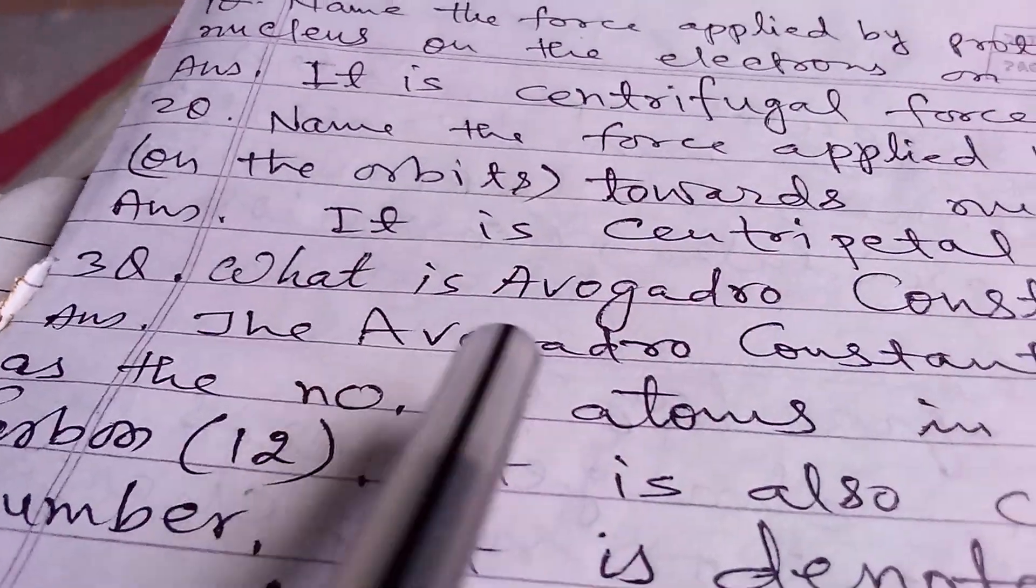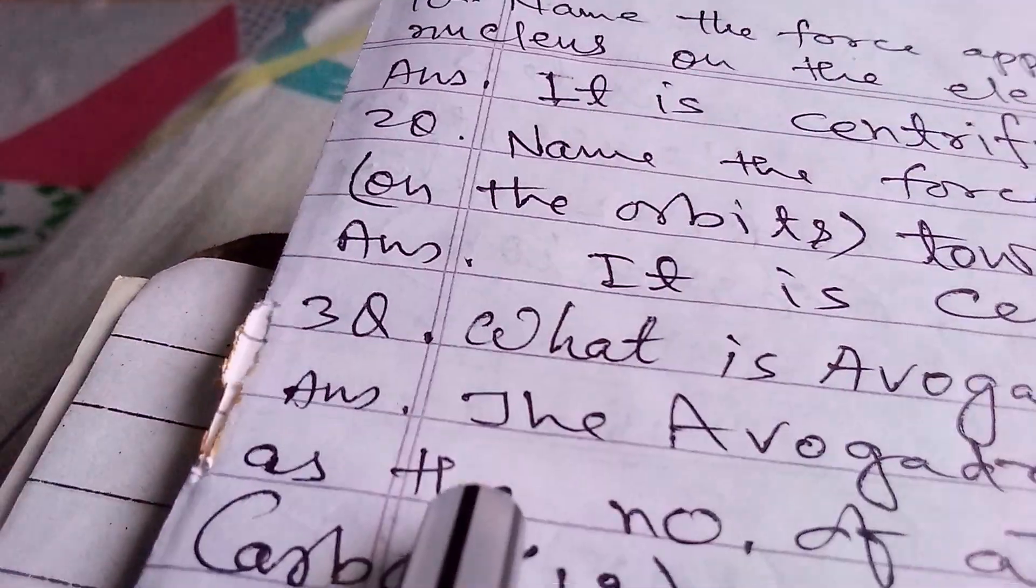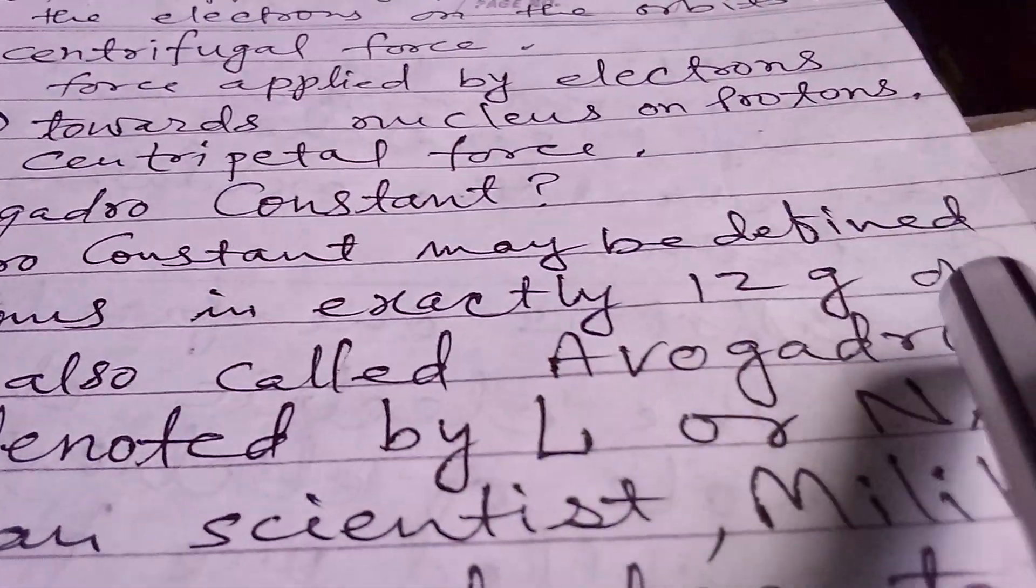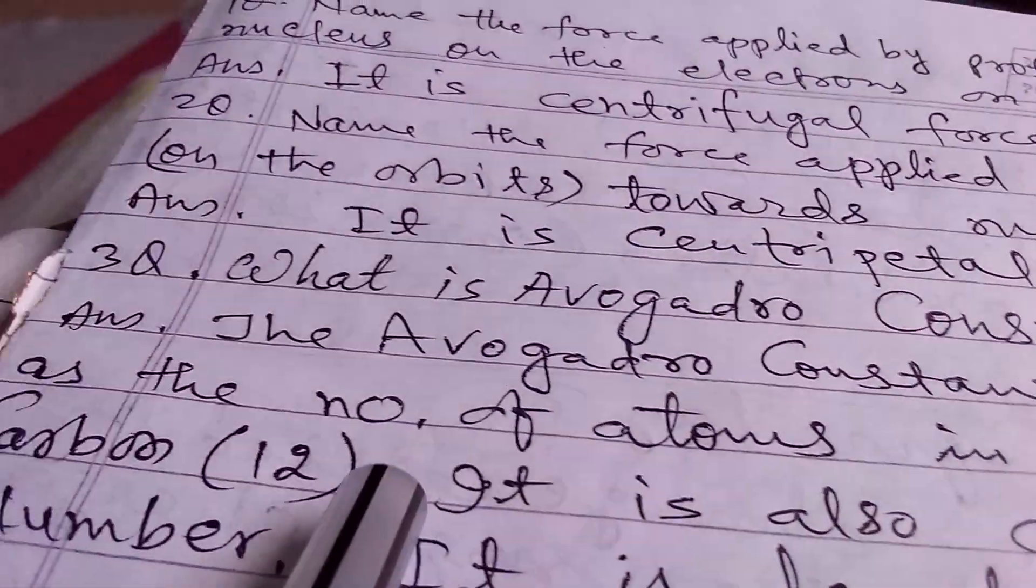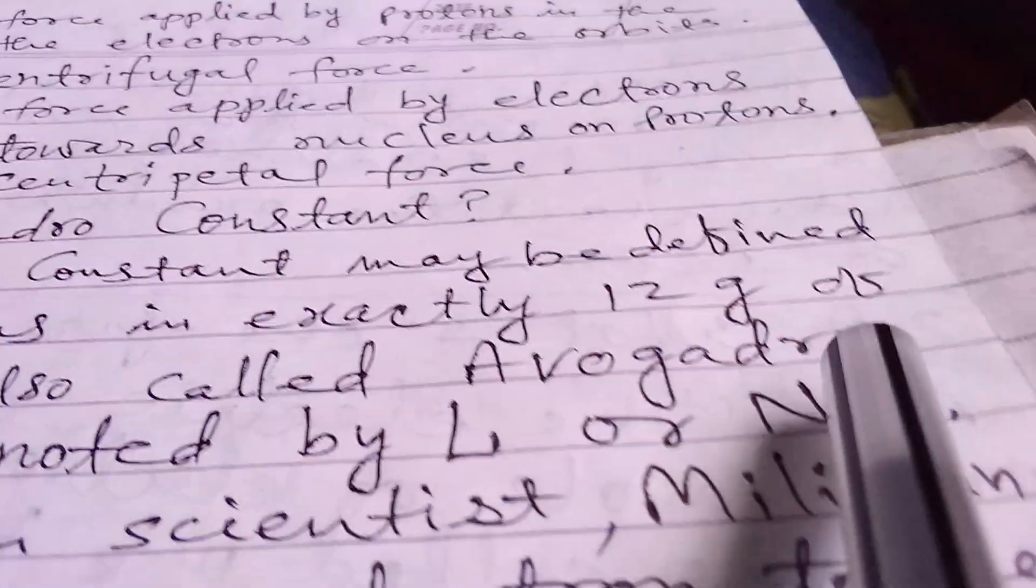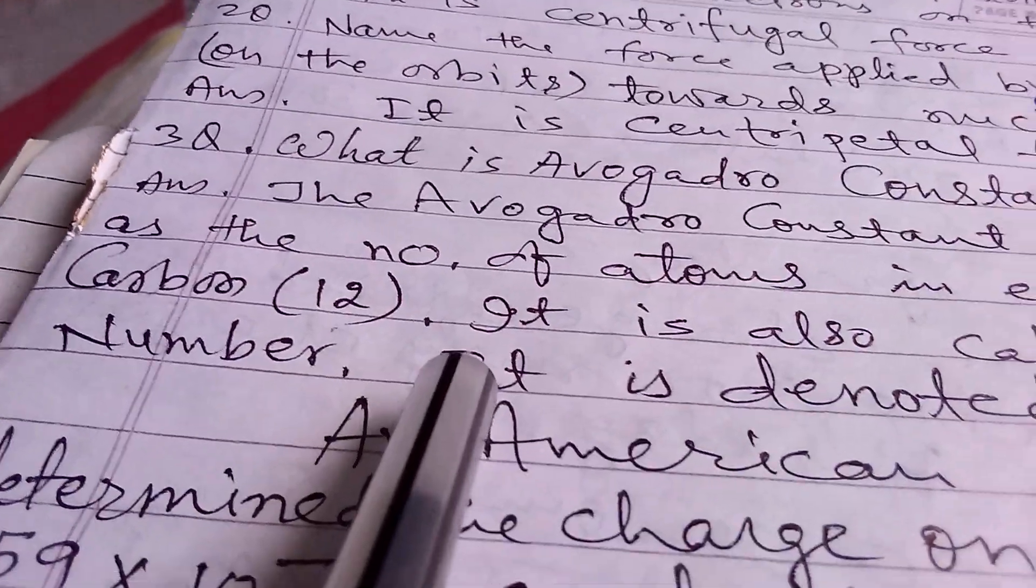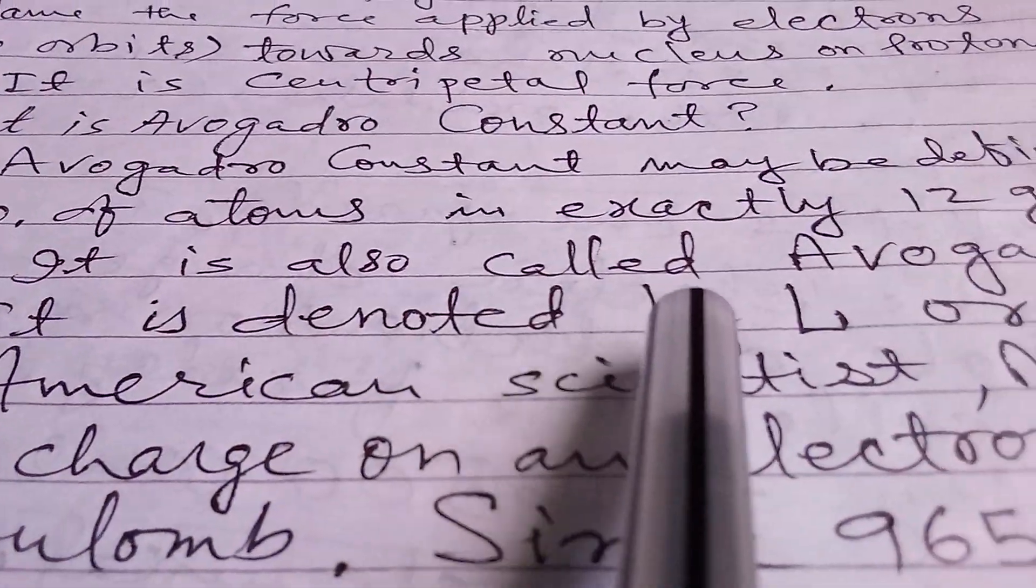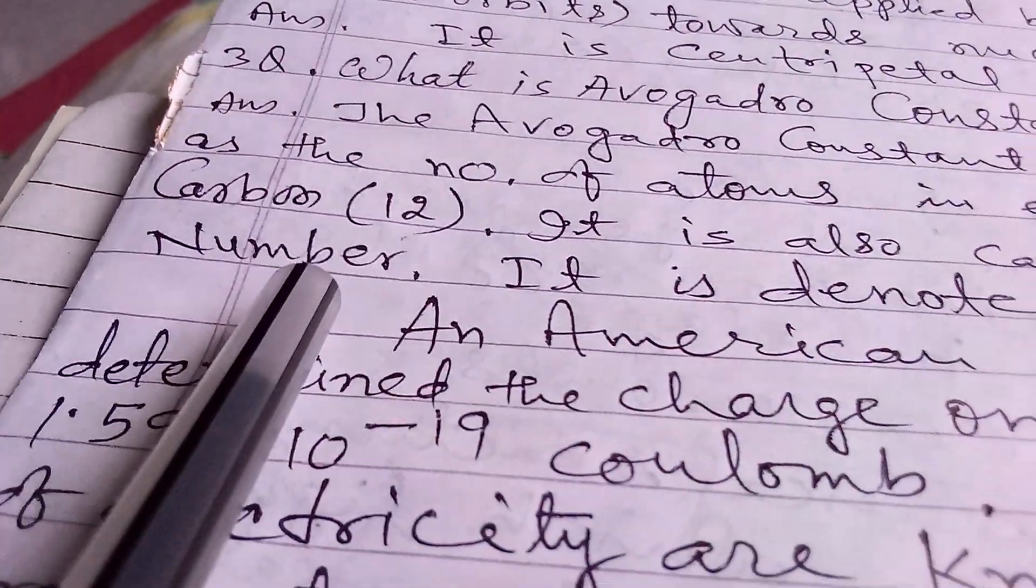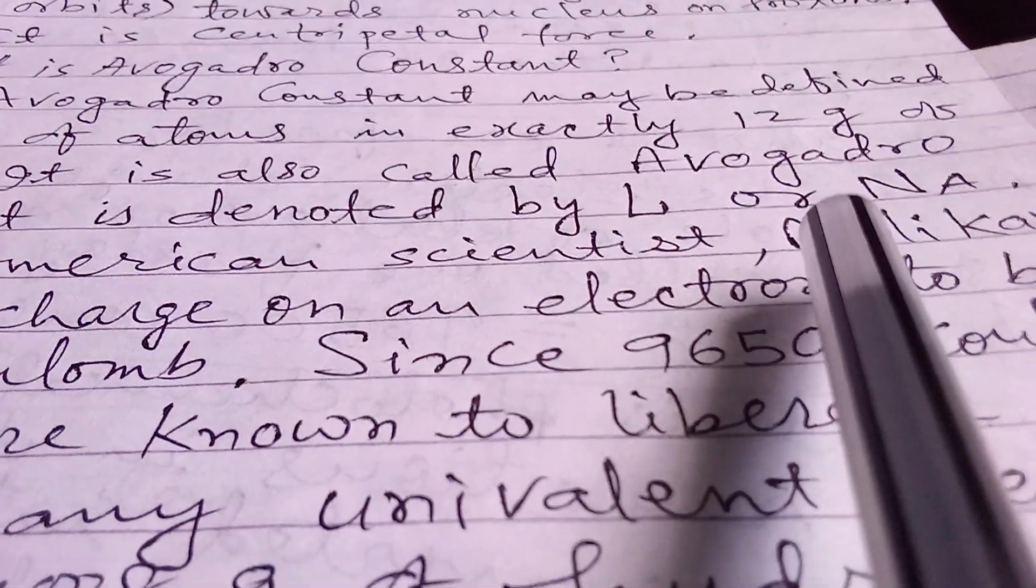Third question: What is Avogadro's constant? Answer: The Avogadro constant may be defined as the number of atoms in exactly 12 grams of carbon-12. It is also called Avogadro number. It is denoted by capital L or capital N.